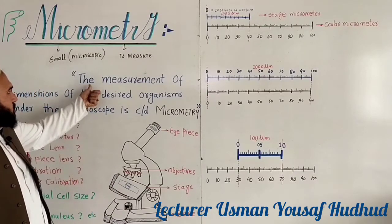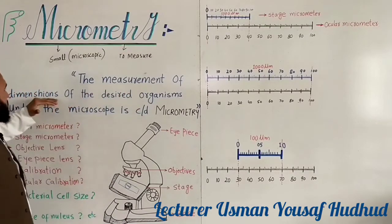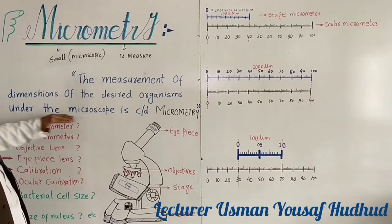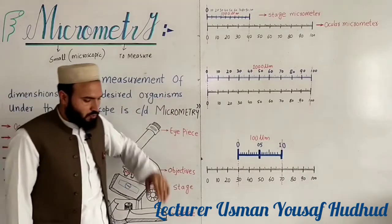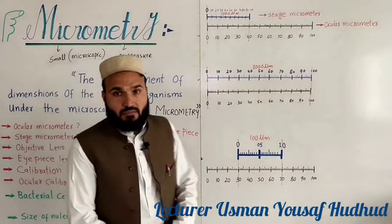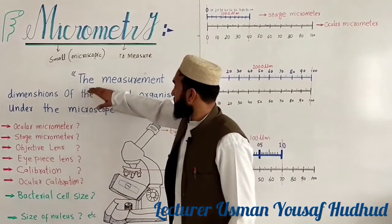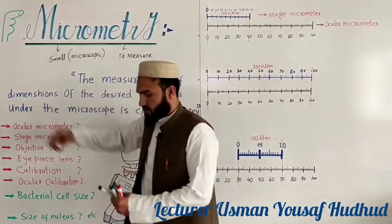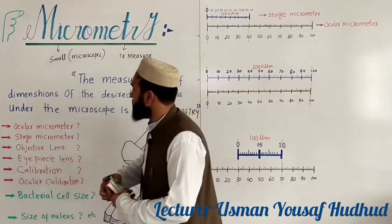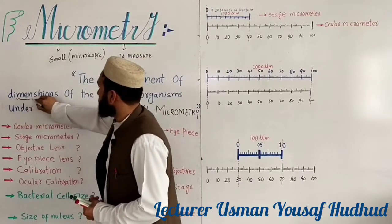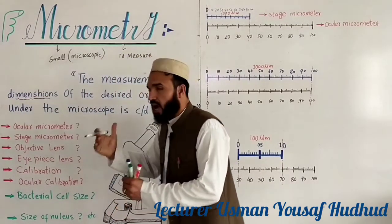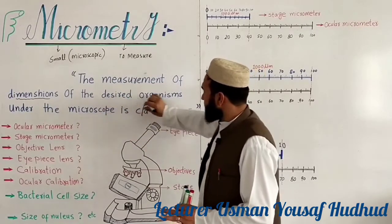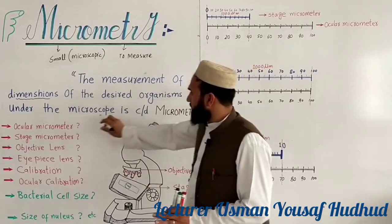The proper definition: the measurement of dimensions of the desired organisms under the microscope is called micrometry. Here, 'dimensions' means length, depth, and height of the desired organisms under the microscope.